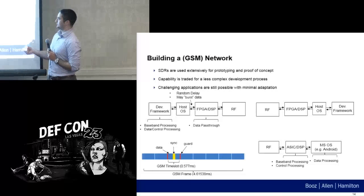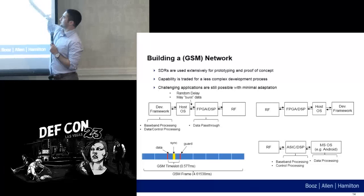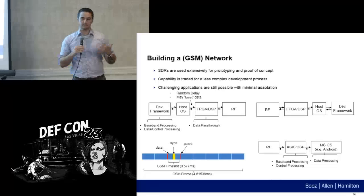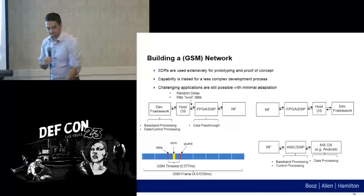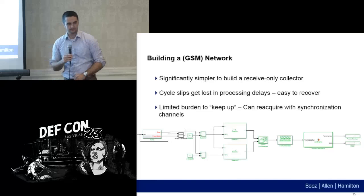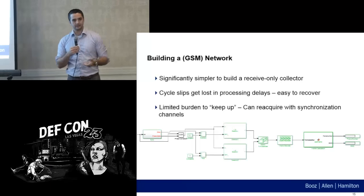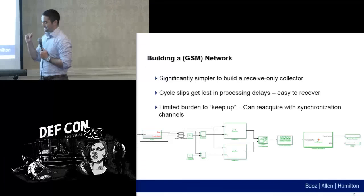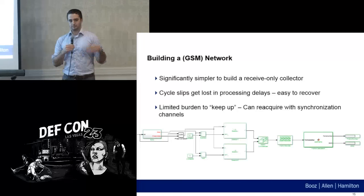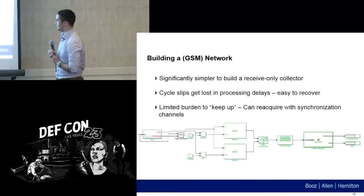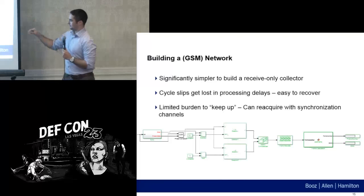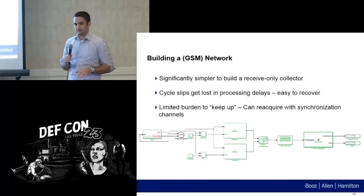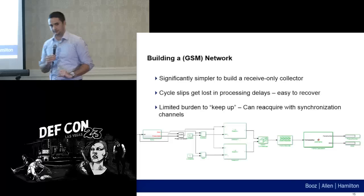The trick is to either reduce the amount of processing that happens on the host, or reduce the amount of data flowing over the interface. Either way, it buys you closer to real-time capability. It's significantly easier to build just a collector. In Simulink, you can just hit go, the model will run, and if you start falling behind it buffers in memory on a variable-sized buffer you can configure. Much easier to build receive-only; much harder to build transmit and receive capability in a single model or flow graph.